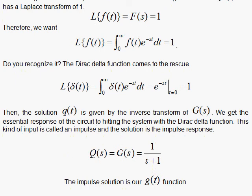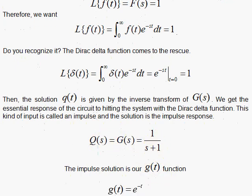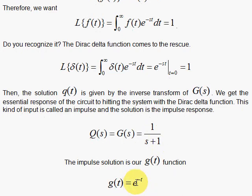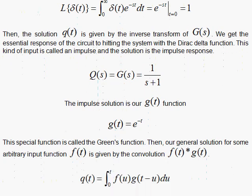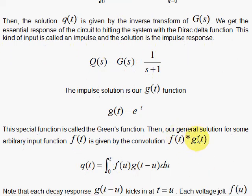With that f(t), the solution is special. It's the e^(-t), which is a Green's function. That special function gives us the response when we whack the system with a Dirac delta function. Then, the general solution is given by a convolution of the Green's function with the function that we are applying to the system.